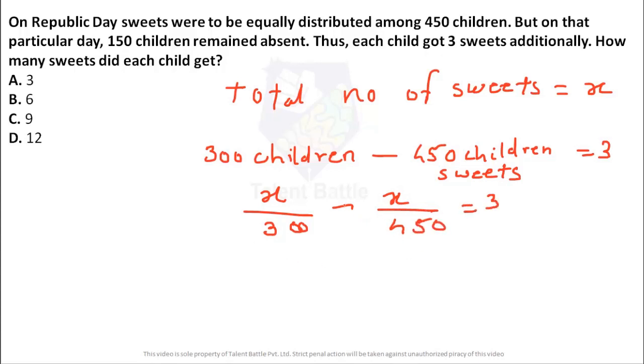Now suppose I need to write down the total number of sweets were x, and if I want to distribute it among the 300 students or children, how I can distribute it? x divided by 300. So each child will get x divided by 300 sweets minus how I could have distributed it among 450 children. Total number of sweets are x divided by 450 is equal to 3. So this equation is important, the sweets which students actually received on that day which is x divided by 300 minus sweets which were initially supposed to distribute like x divided by 450 is equal to 3.